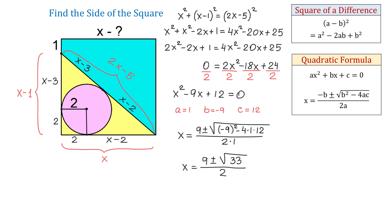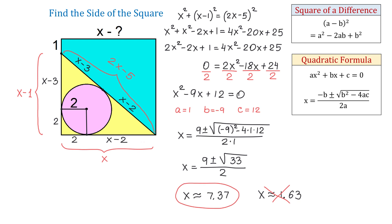Using the calculator, we get two solutions. The first one is approximately 7.37 and the second one is approximately 1.63. The second solution is too small for our problem, so the side of the square is approximately 7.37 units.